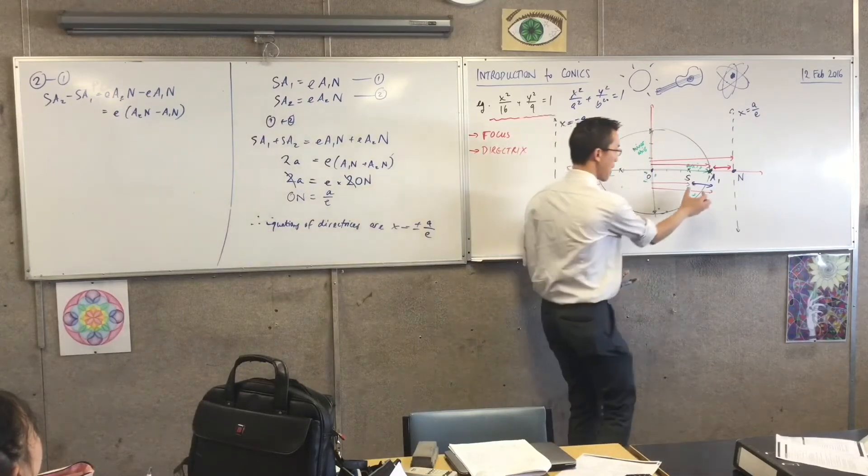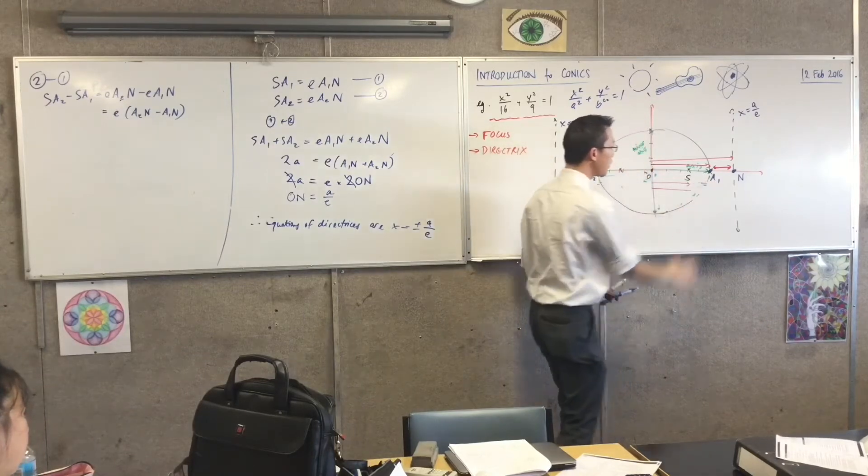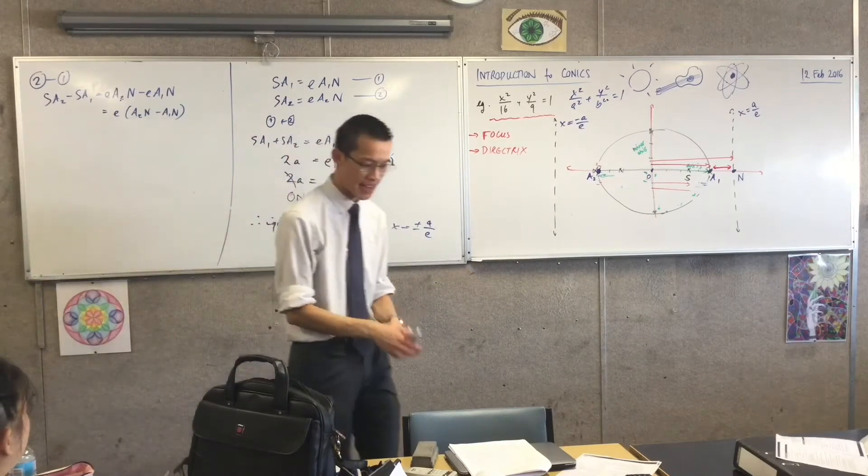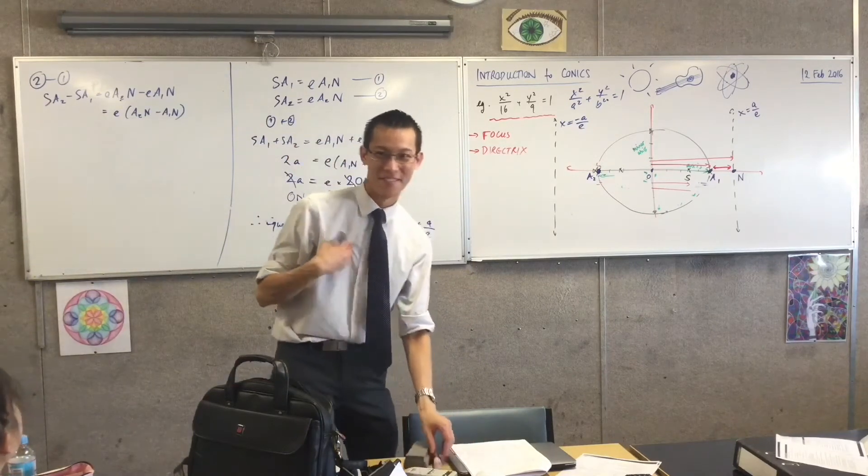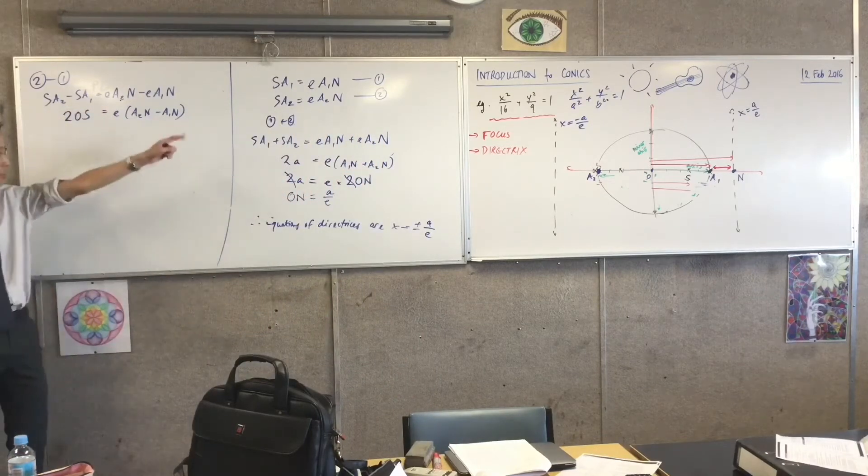So, because I'm subtracting this from this, this part just goes. So, now, I've got double of, double of what? OS. You see that? And you see why OS is kind of valuable to me? So, I'm going to write 2OS over here on the left-hand side, visual argument, okay?